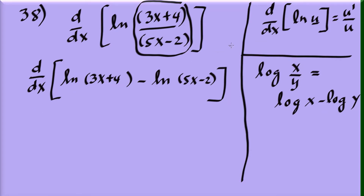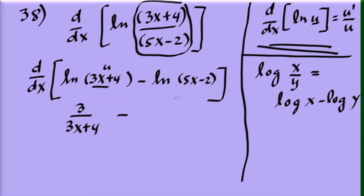Now apply the formula: derivative of natural log of u is u prime over u. For the first term, u is (3x plus 4), so u prime is 3, giving 3 over (3x plus 4). Minus: u is (5x minus 2), u prime is 5, giving 5 over (5x minus 2).